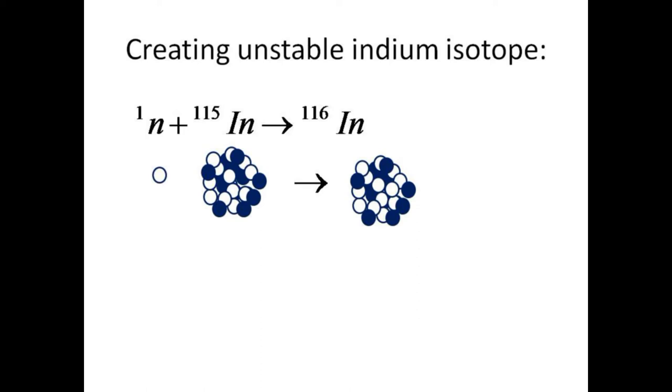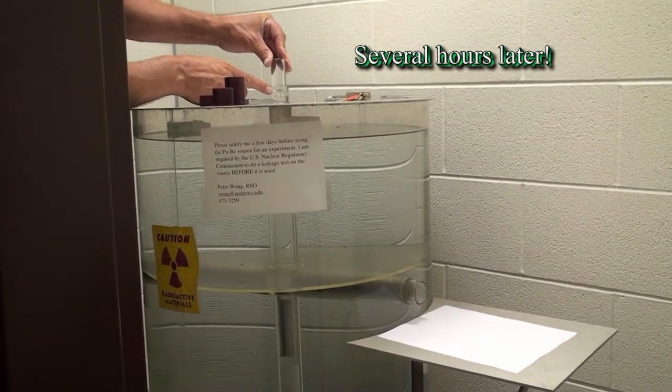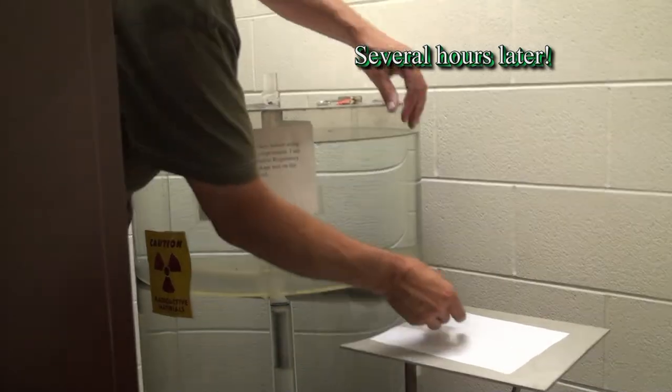Placing the non-radioactive indium, mass number 115, next to the neutron source, we can embed a neutron to transform it into the unstable isotope indium-116. We now reverse the procedure to remove the radioactive sample of indium-116.